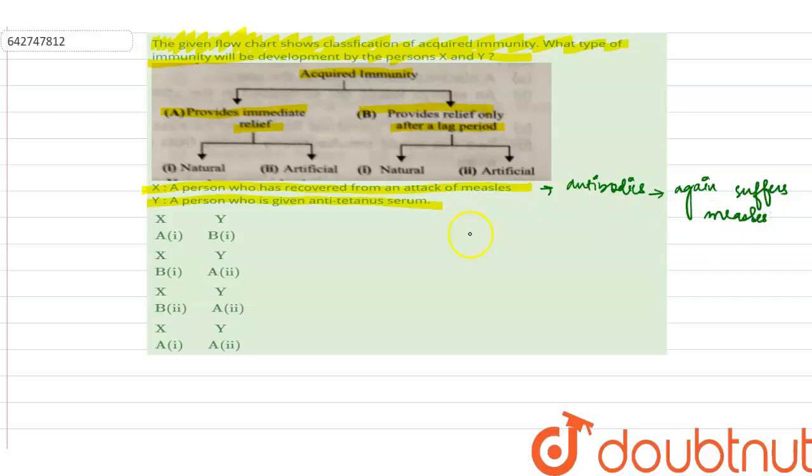So X will be under the category provides immediate relief, and it will be natural because antibodies have already been in our system.